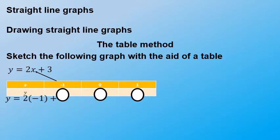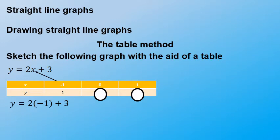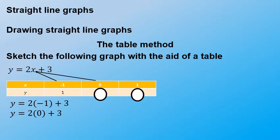You just need more than one coordinate to draw a straight line. First, replace x with negative 1: y equals 2 times negative 1 which gives negative 2, plus 3, which gives an answer of 1. So my first coordinate is (negative 1, 1). Then replace x with 0: y equals 2 times 0 plus 3, so y equals 3 when x is 0.